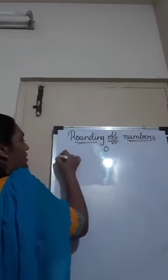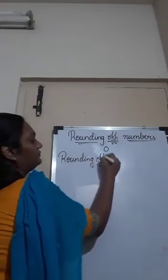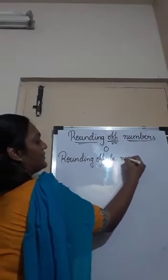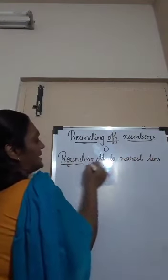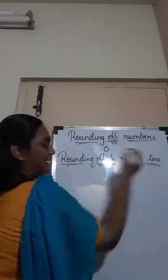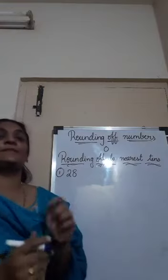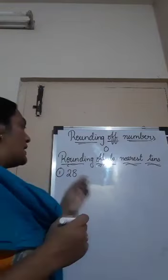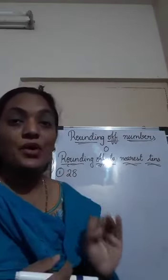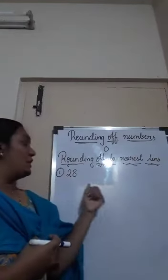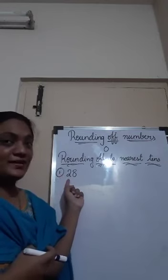So first: rounding off to nearest 10. Let's take the same example, that is 28 chocolates. Remember one thing — whenever you are rounding off to nearest 10, in the ones place if you have 0, 1, 2, 3, or 4, you will round off the ones place to 0, and the tens place will remain the same.